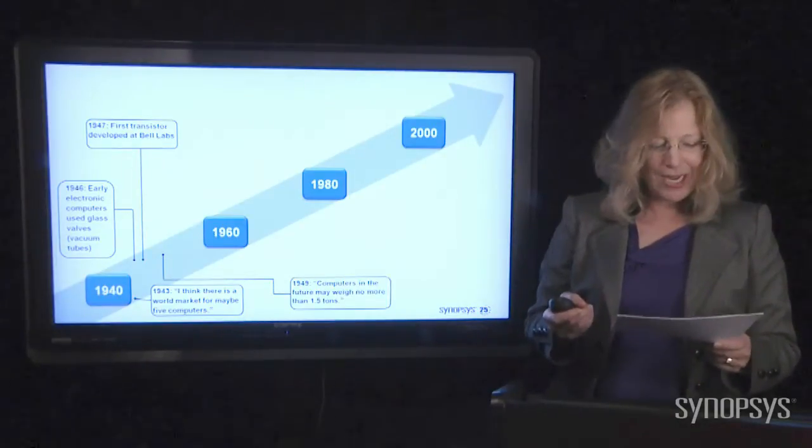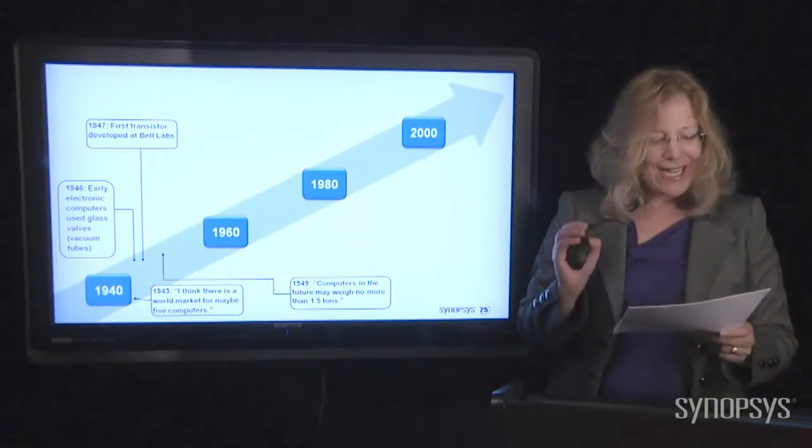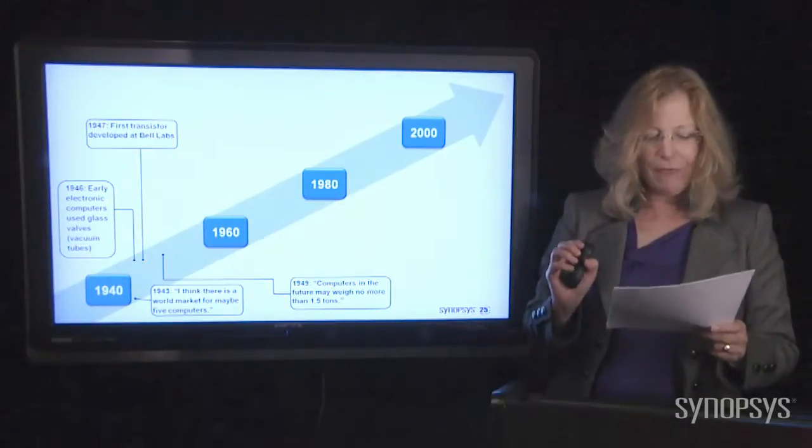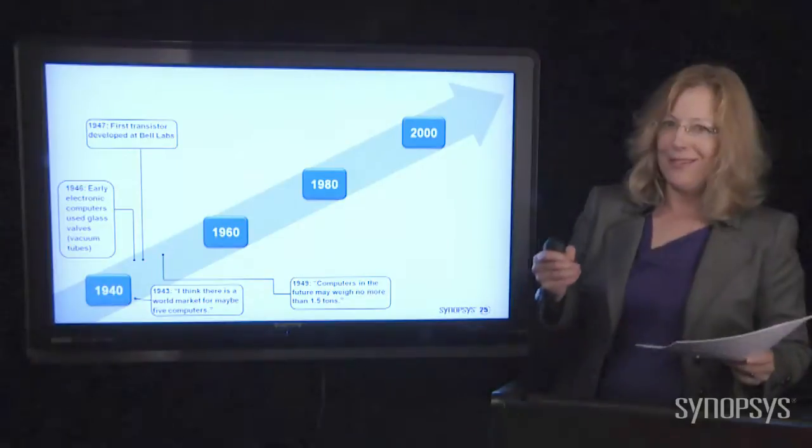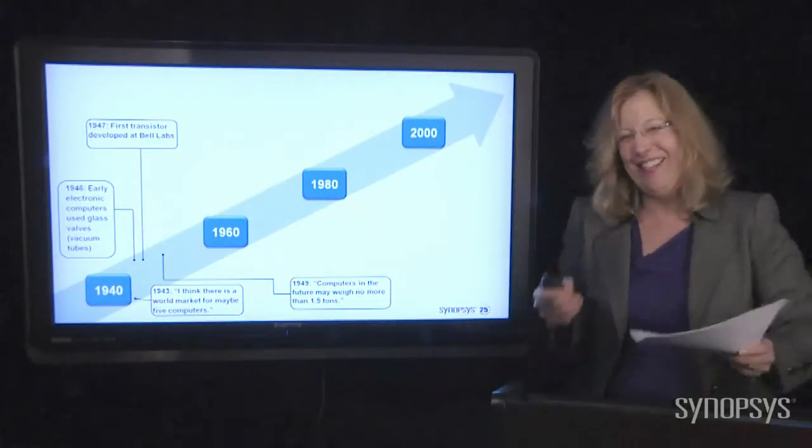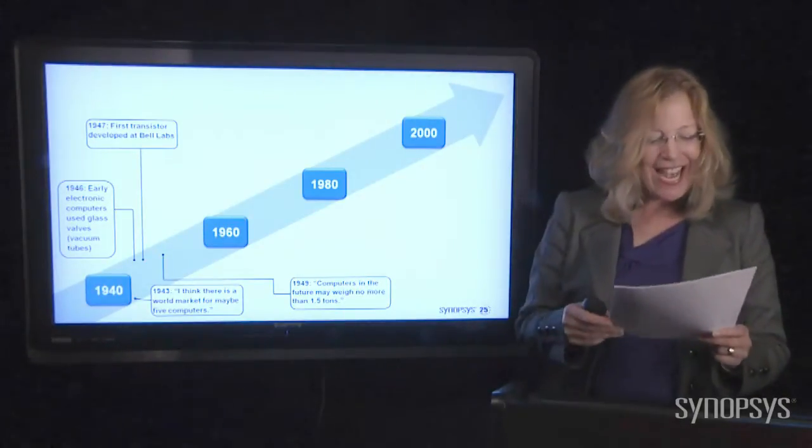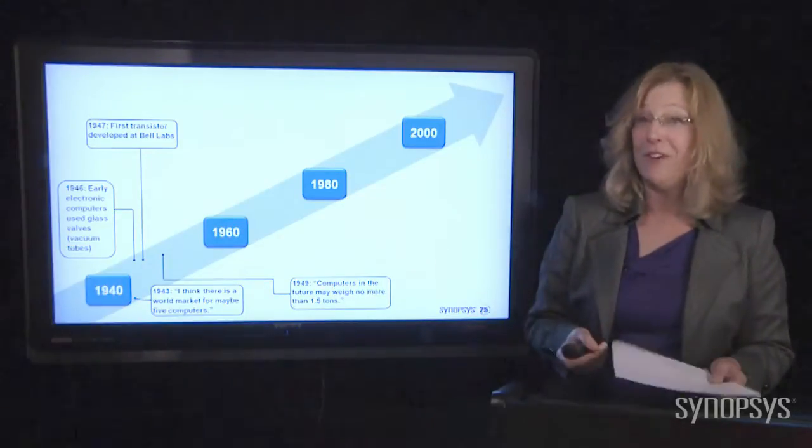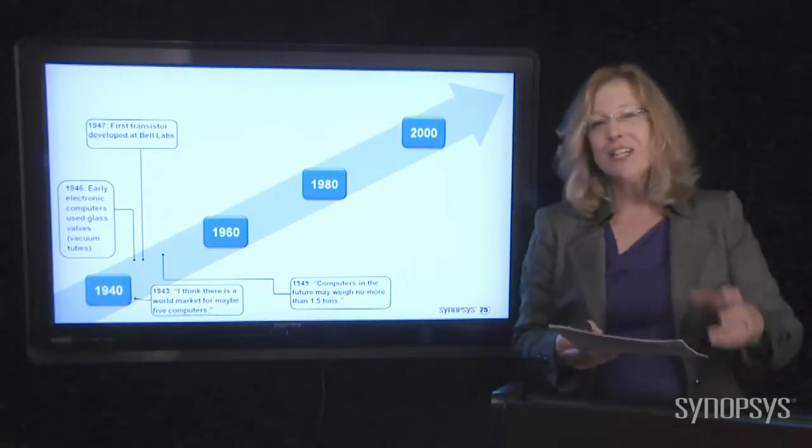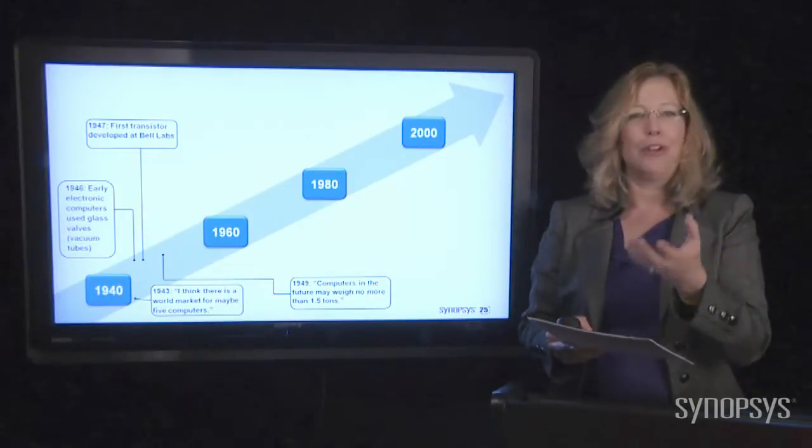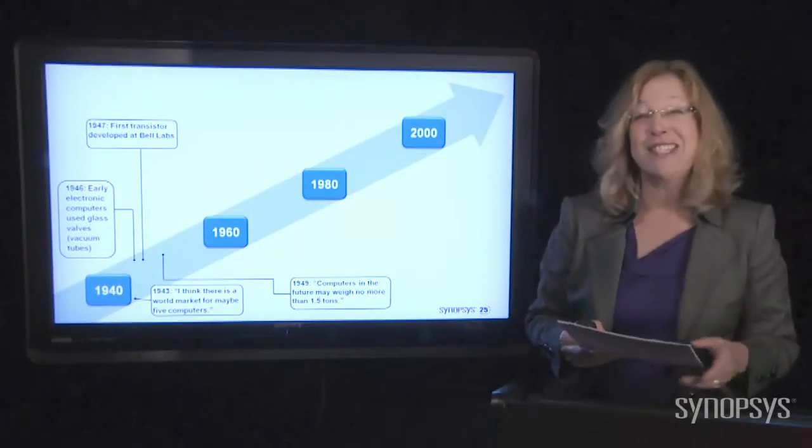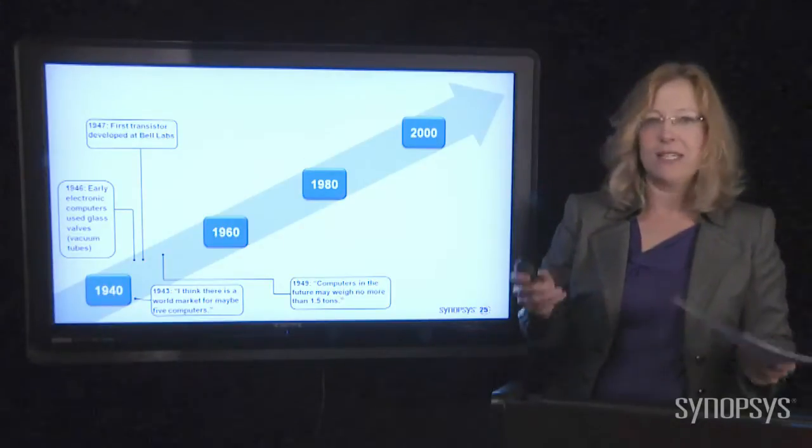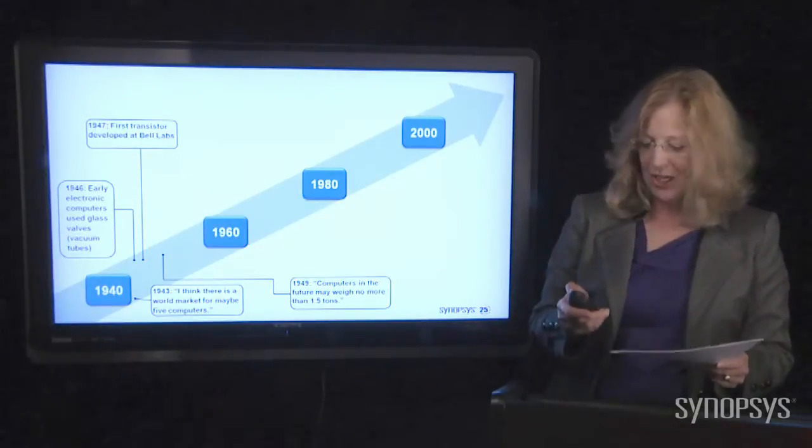In 1949, there was a quote in Popular Mechanics magazine where they were forecasting the relentless march of science, and they said computers in the future may weigh no more than 1.5 tons. Now imagine your latest laptop or your tablet that now we're talking about six ounces for a tablet computer that can do obviously tons more than these ancient computers could.